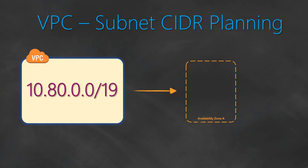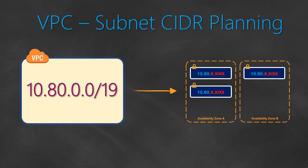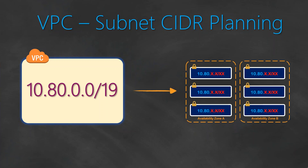For example, you wanted to split it into two availability zones spanning across them. You will want a private subnet, public subnet, and a data subnet. So what should be your subnet ranges?